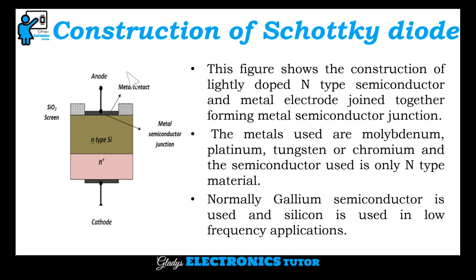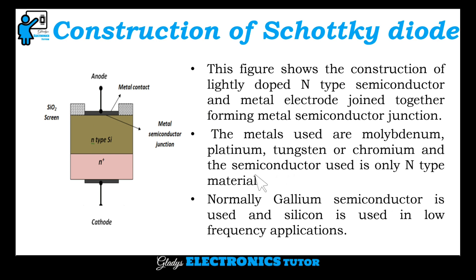This is the construction of the Schottky Diode. This figure shows the construction of a lightly doped N-type semiconductor and the metal electrode joined together, forming a metal-semiconductor junction. The metals used are molybdenum, platinum, tungsten, or chromium.